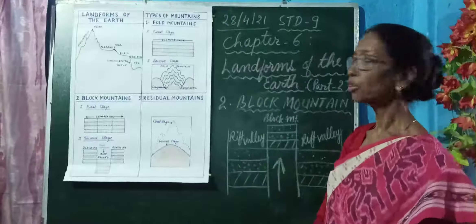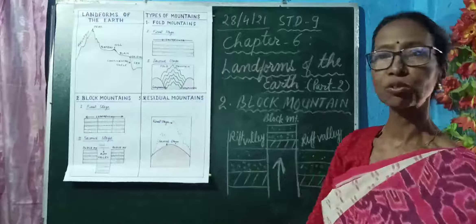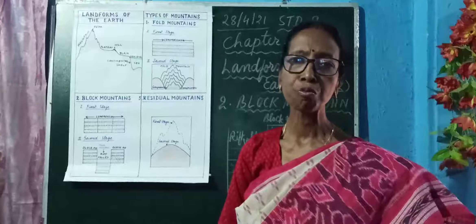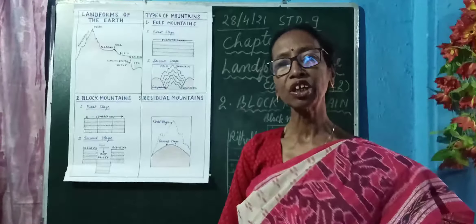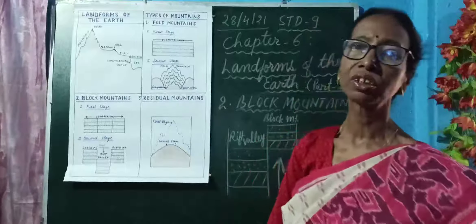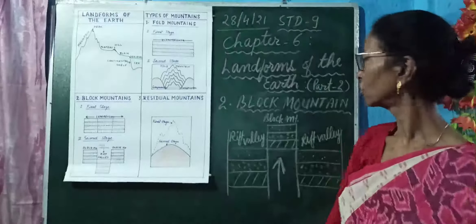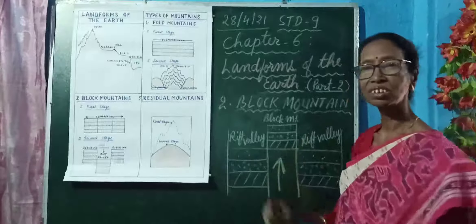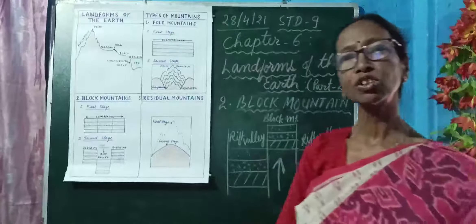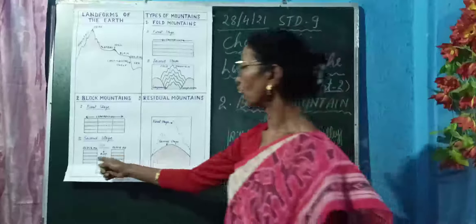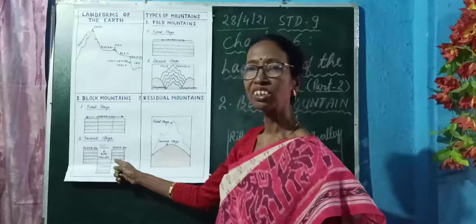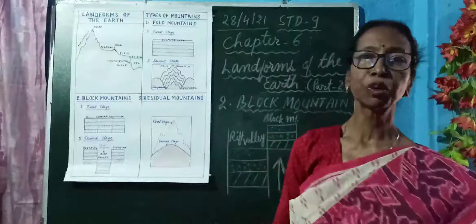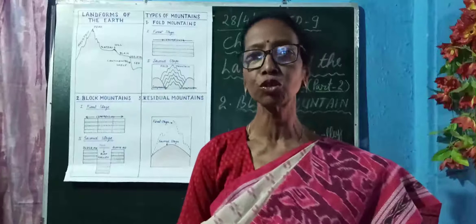Wherever block mountains are formed, side by side, rift valleys are also formed. The main features of block mountains are: they have a flat top and steep sides. The main features of rift valleys are: they are flat-bottomed valleys with steep sides. So, wherever block mountains are formed, rift valleys are also formed.